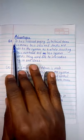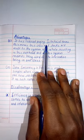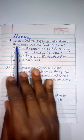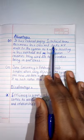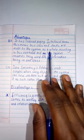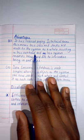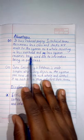Looking at the advantages, it has reduced paging. In technical terms, this means less calls and checks are made to the system as a whole, resulting in less overhead and less system resources being used due to information being in one class.